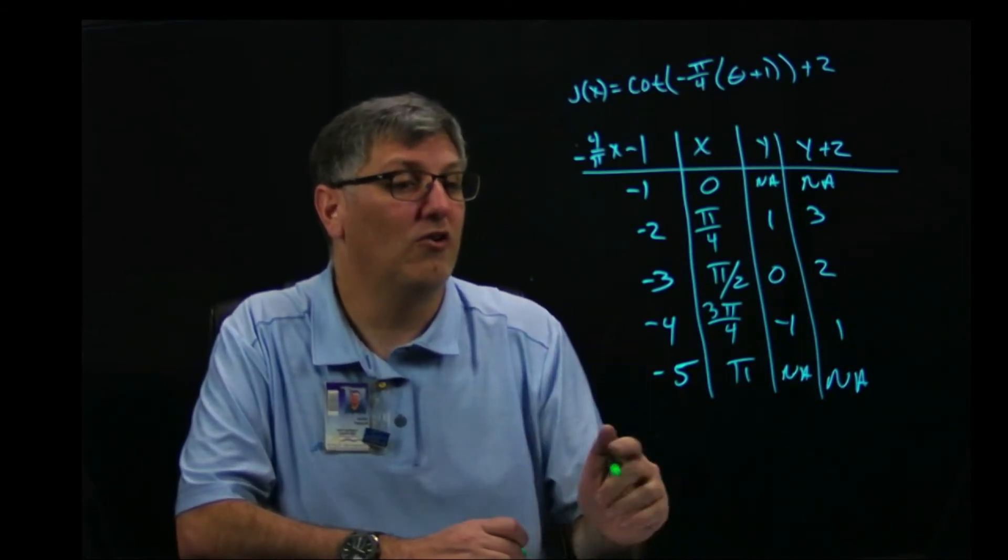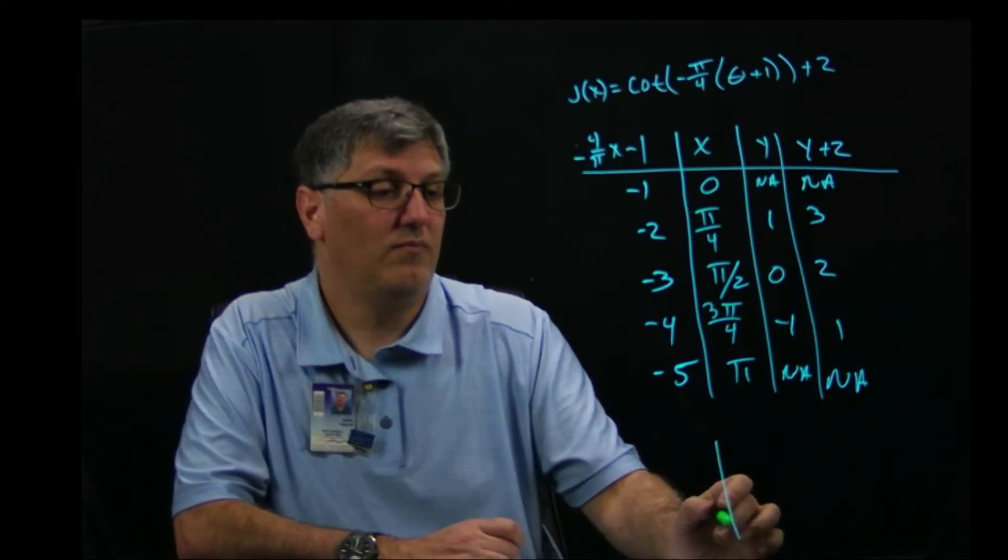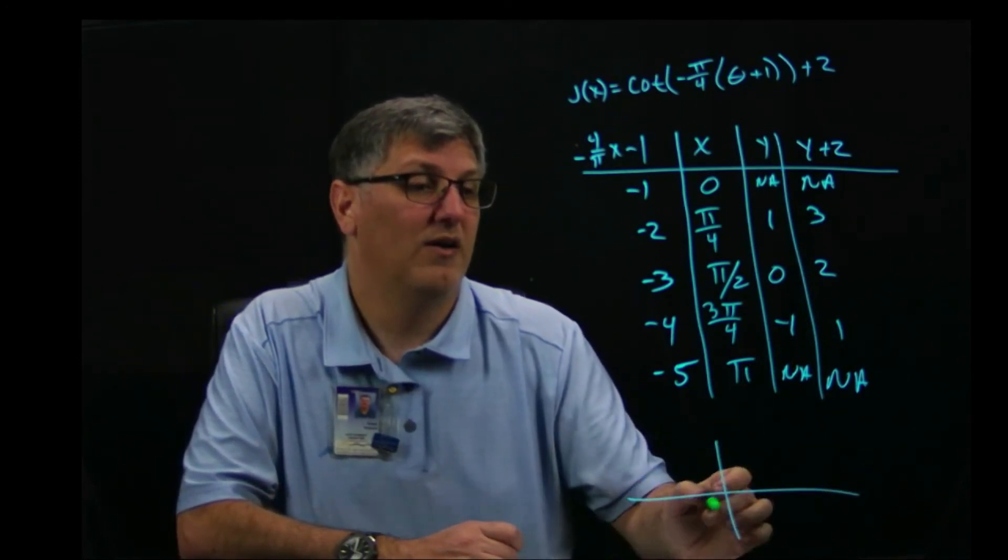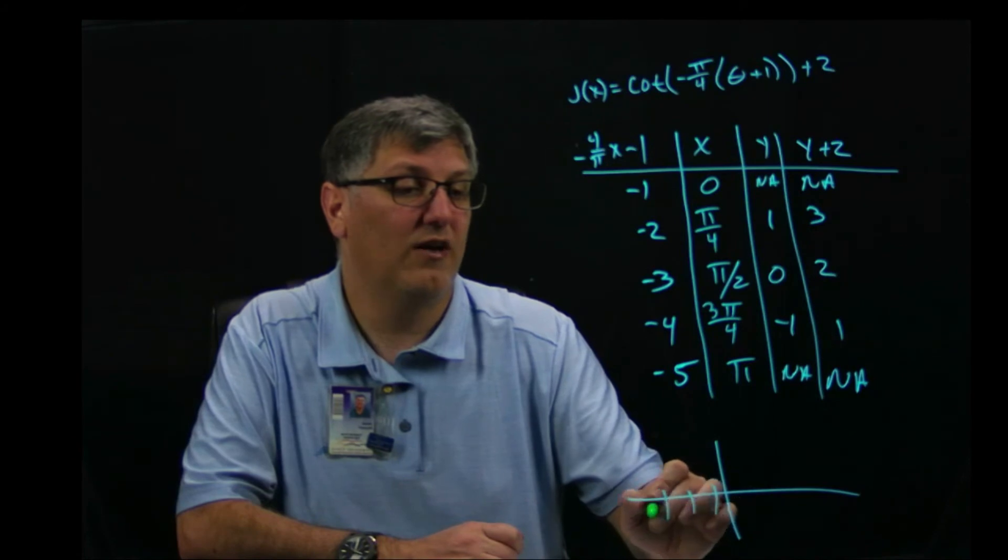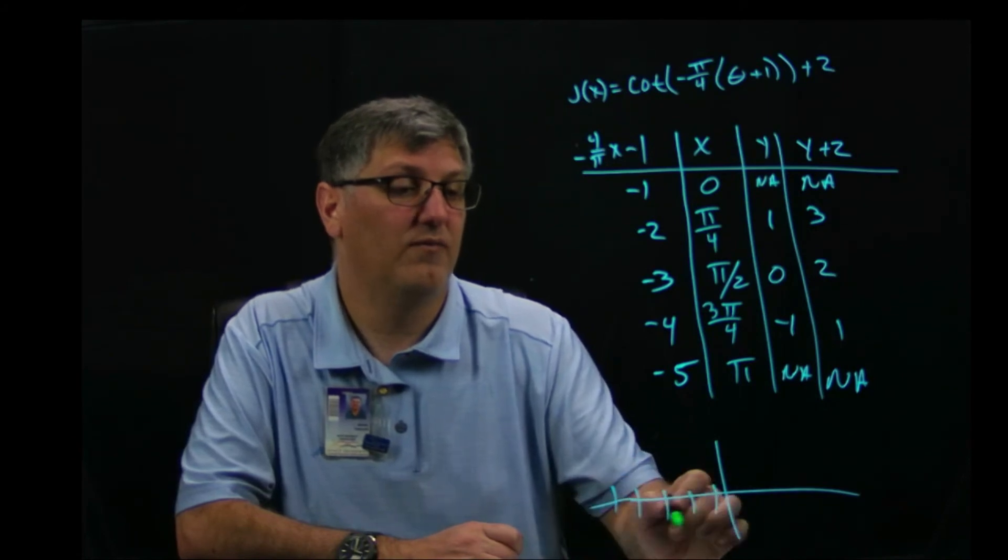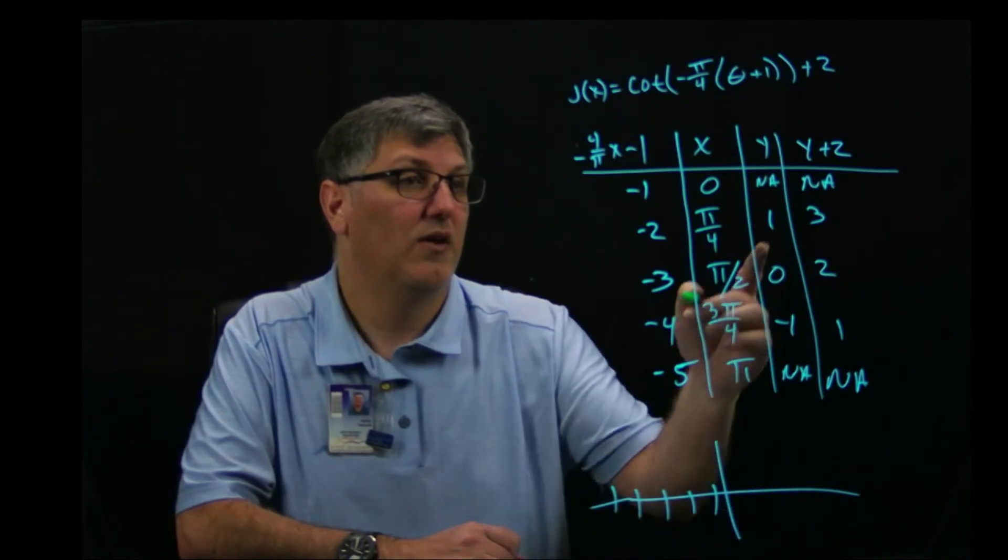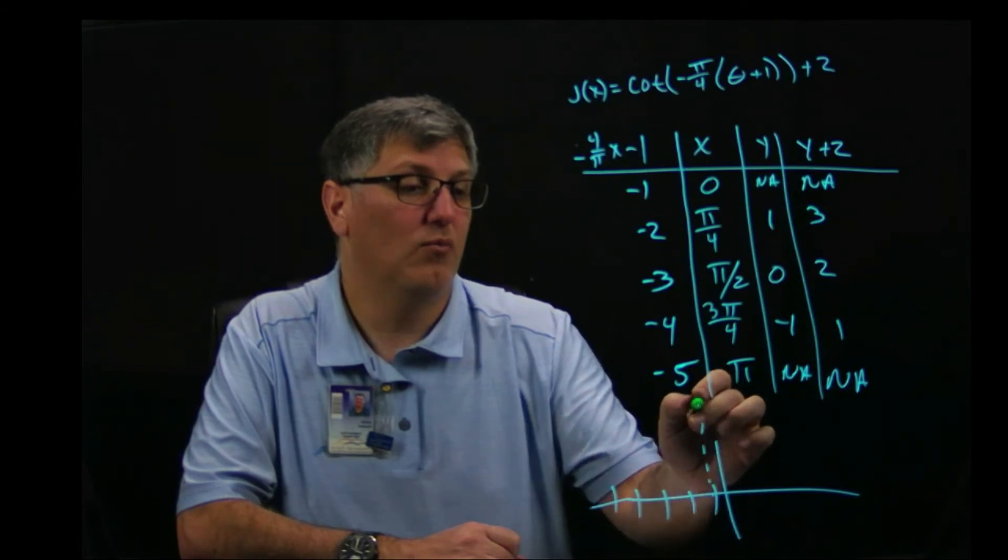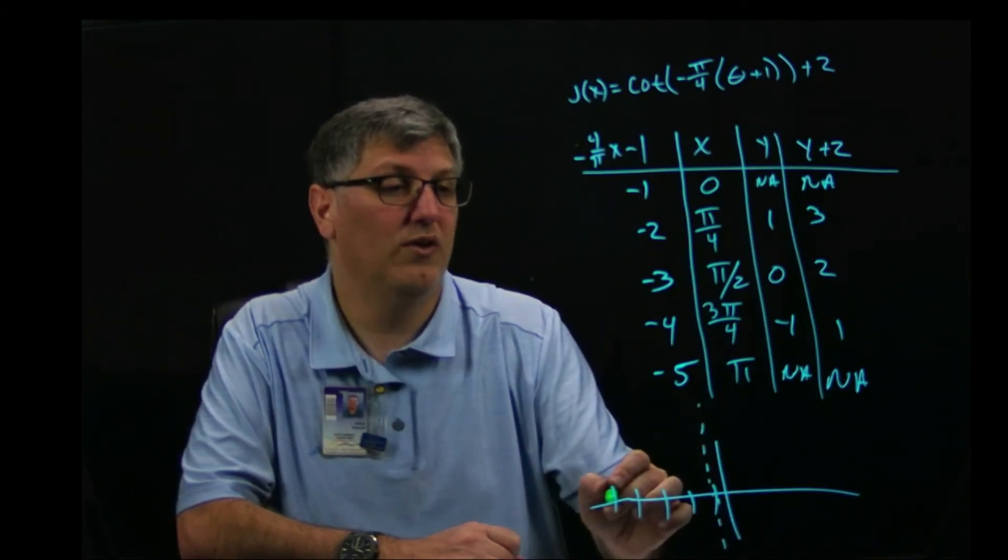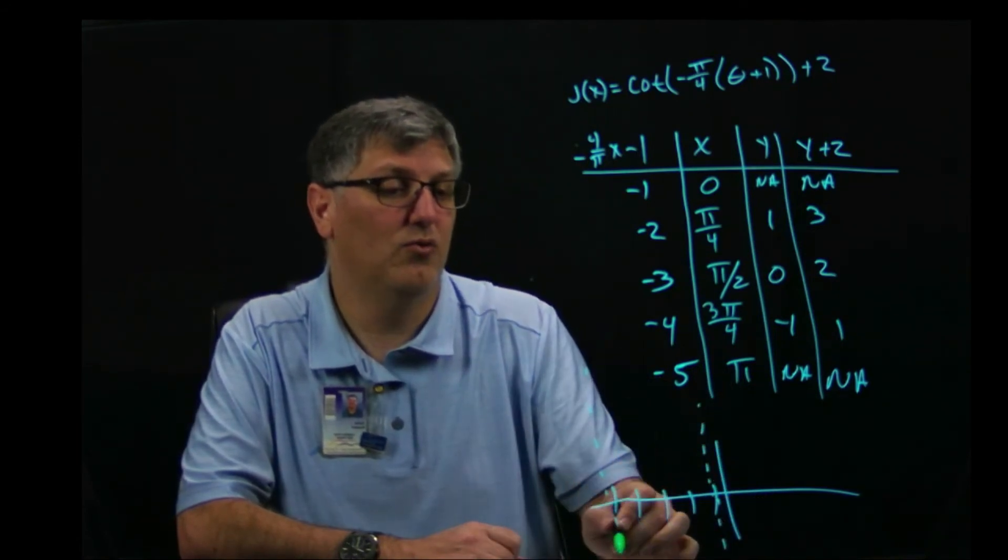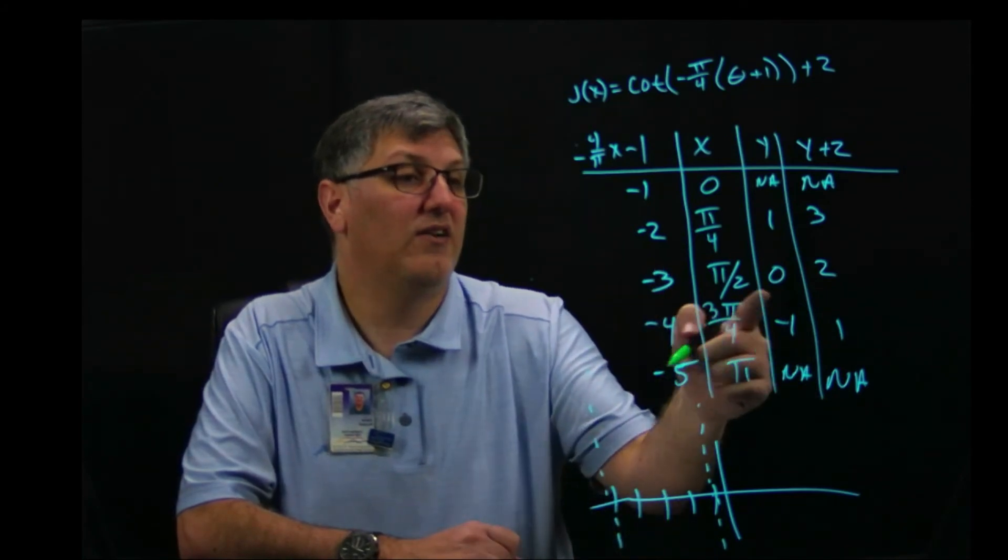All right. So what we're going to do now at this point is, let's graph. Let's see. Negative one, negative two, negative three, negative four, negative five. At negative one, I have an asymptote. Negative five, I have an asymptote.